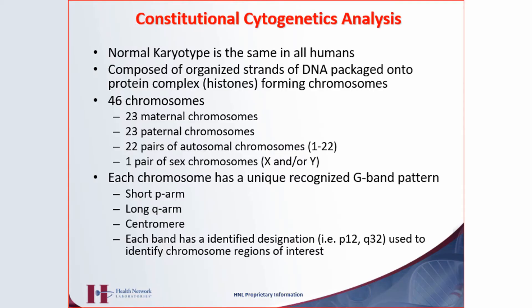Let me just do a quick review here on chromosome function and setup. Normal karyotype, like I said, is the same in all humans — everybody has the same amount of chromosomes and they all look alike. There's no difference from person to person or ethnicity. You compose an organized strand of DNA coiled up into histones or protein complexes, which forms the chromosomes themselves. There are 46 — 23 you get from your mother, 23 you get from your father. The X always comes from your mother because the woman has two X's.